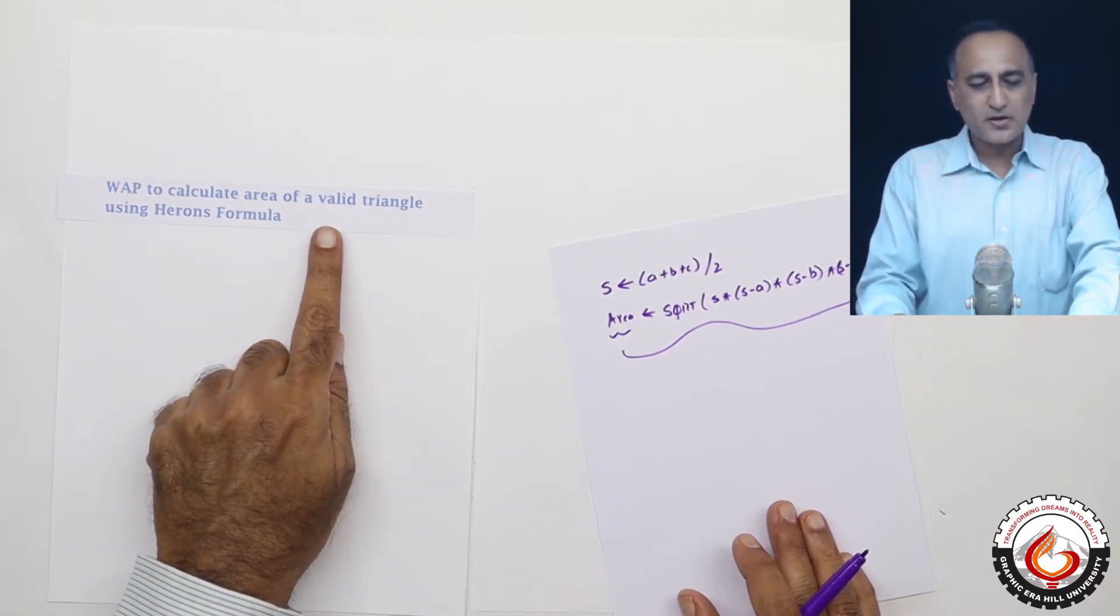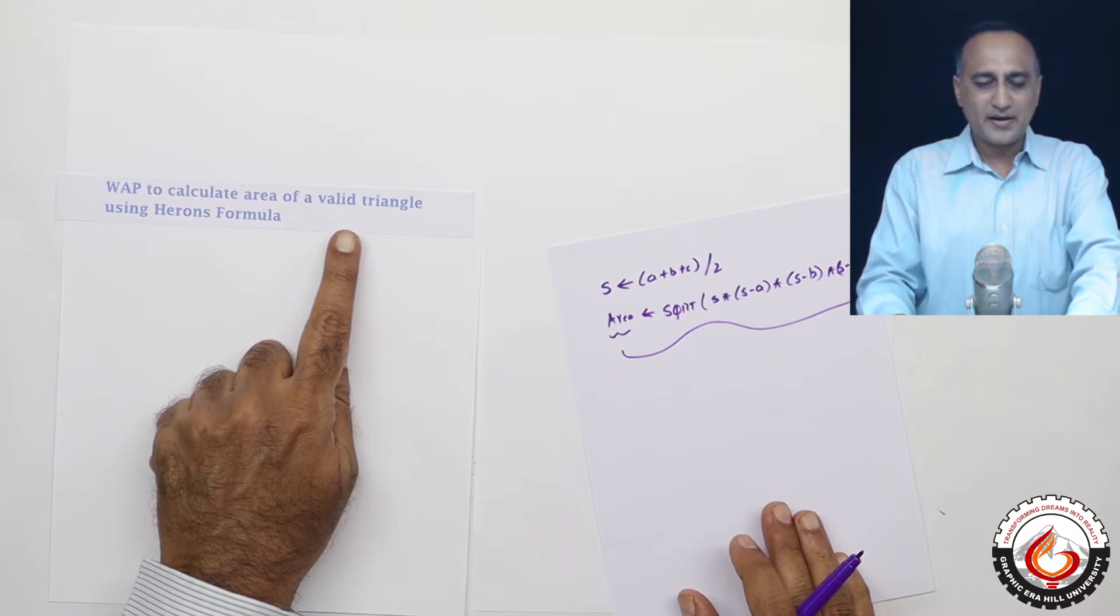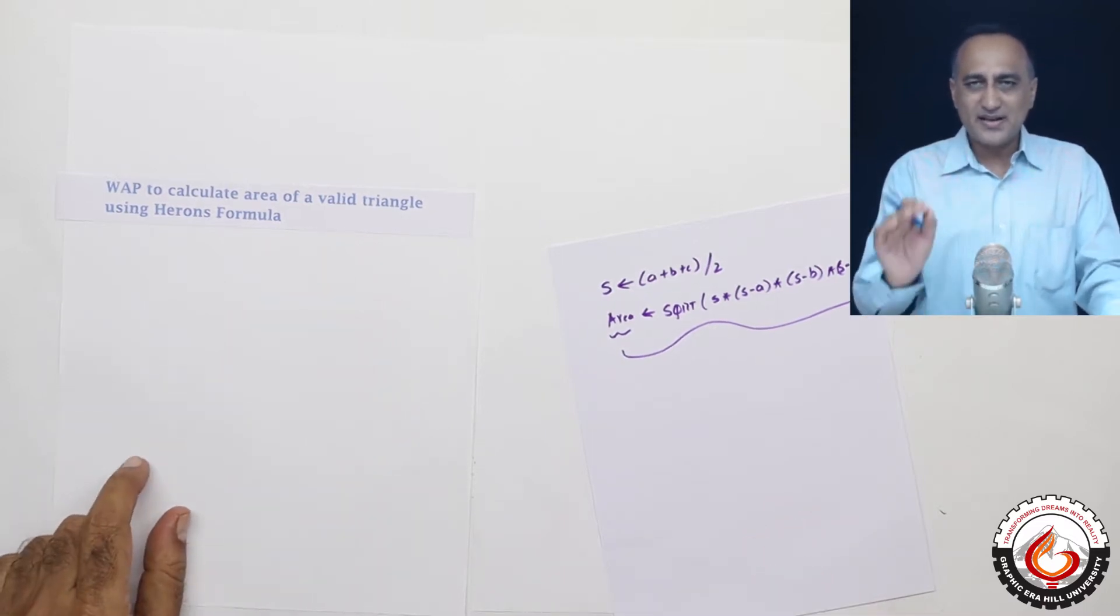Now there's an important word here, something called a valid triangle. Now what exactly is a valid triangle? A triangle is said to be valid if the sum of any two sides is greater than the third side.